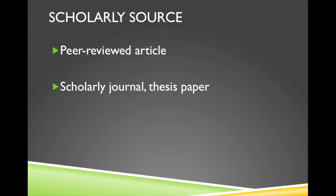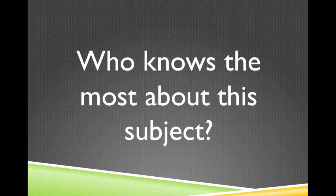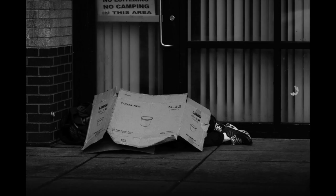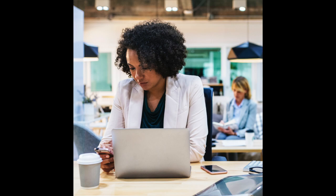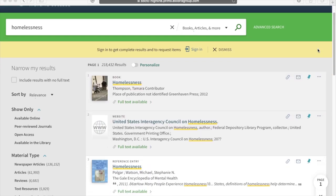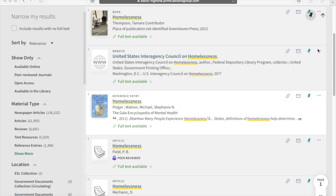Let's say you've been assigned a story about homelessness. Who knows the most about this subject? Someone who's homeless or has been homeless in the past would be a primary source. Someone who works with homeless people, like social workers, doctors, and organizations dedicated to helping homeless people, are secondary sources. A popular source would be a journalist who has written about homelessness in Seattle, for example. Finally, a scholarly source would be one that has published academic work about homelessness.